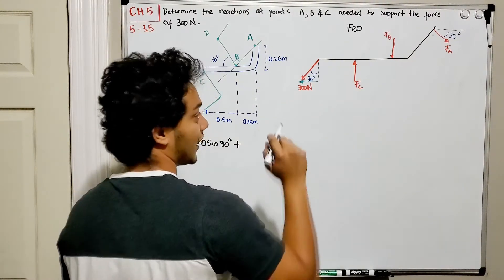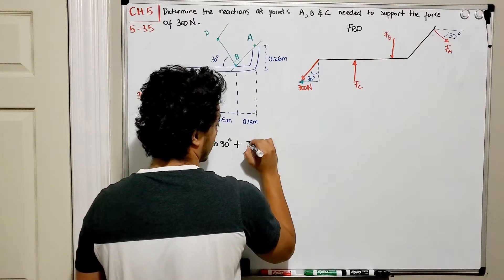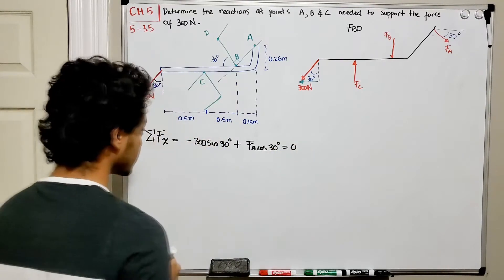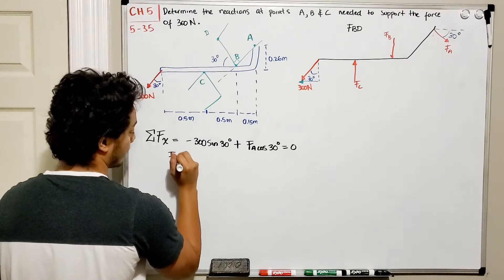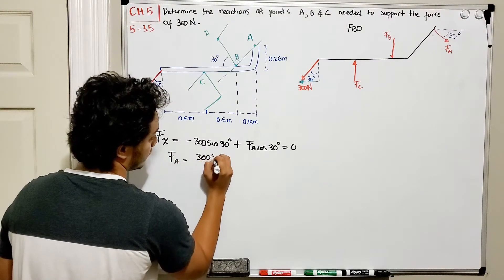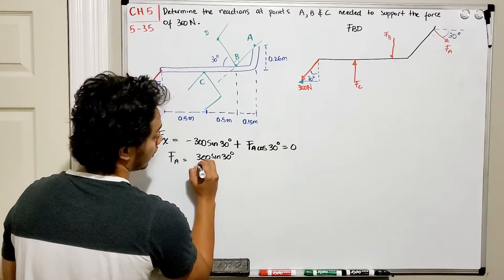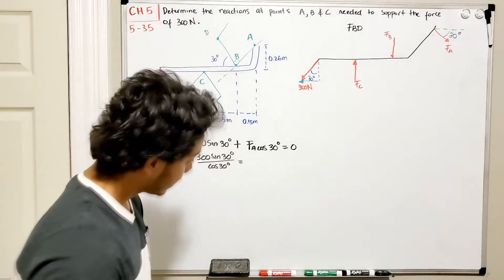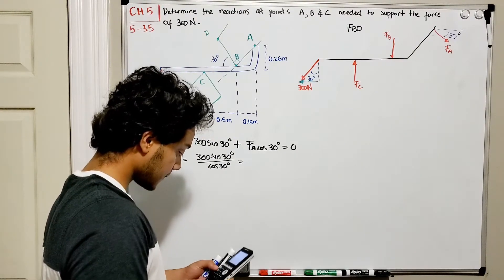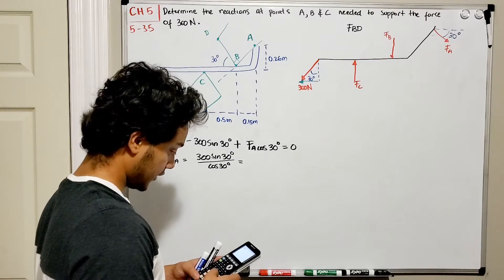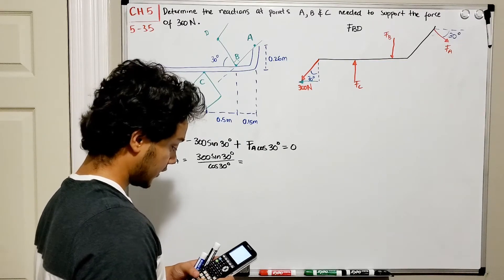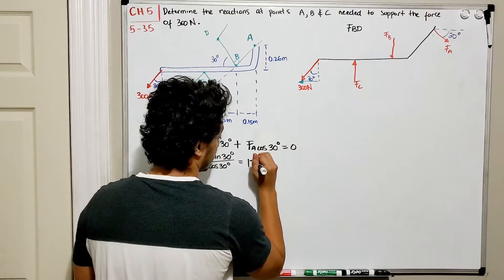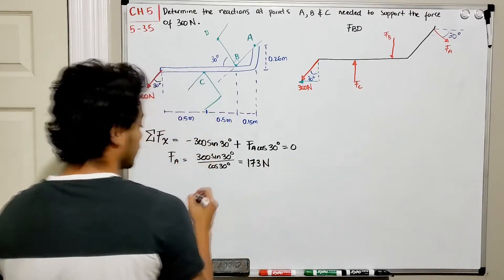Plus the X component of FA, which is FA multiplied by cosine of 30 degrees, and all this should add up to zero. Solving for FA: FA equals 300 times sine of 30 degrees divided by cosine of 30 degrees. Using the calculator, that gives us 173 N. So FA = 173 N — our first answer.